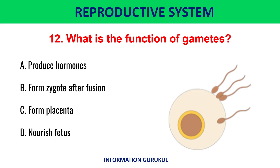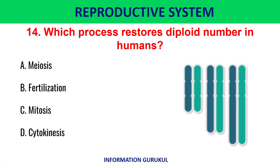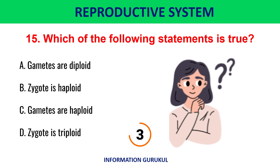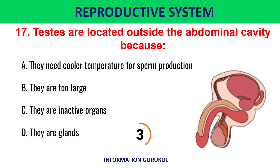What is the function of gametes? Gametes after fusion form a zygote. The external genitalia of males are called penis and scrotum. Which process restores the diploid number in humans? Fertilization. Which of the following statements is true? Gametes are haploid. The male gonads are called testes.